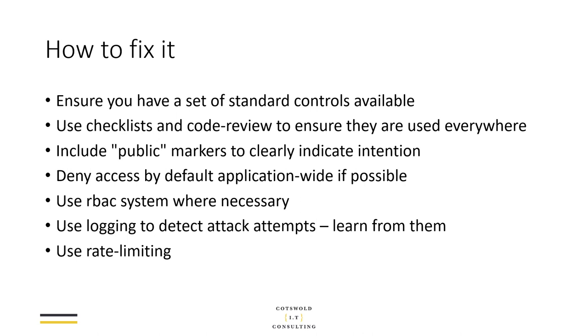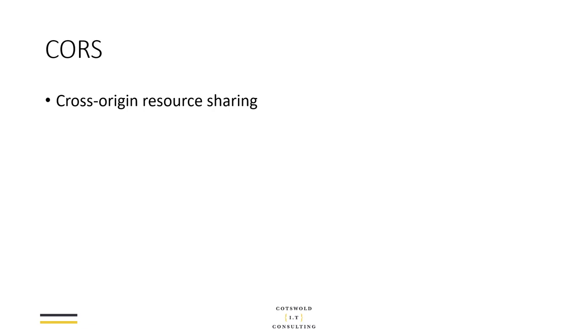One way to do that is rate limiting. I showed that in the last video — it's fairly easy to set up in most frameworks, certainly in .NET. If somebody can't just sit there trying millions of combinations they'll give up very quickly. You have to be careful not to block real users, but it's a very simple control. Also, particularly for APIs but generally as well: if you're using any form of access token, give end users and applications the ability to log out, and invalidate access tokens once they have logged out — giving attackers less attack surface after logout.